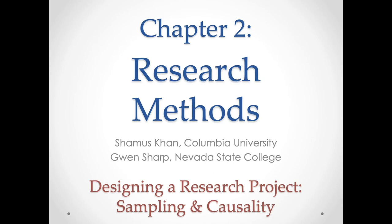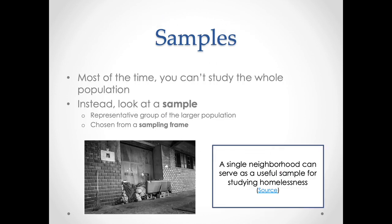When doing a research study, you have to decide who you're actually going to look at. As I said in the previous lecture, we'll be interested in the population of interest. But in general, we can't actually study the entire population that we're interested in, and so instead we have to look at a sample or some subsection of that population.